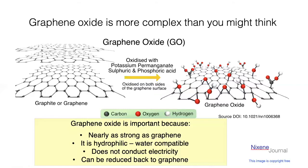Now I want to know what graphene oxide can do. Well, it's nearly as strong as graphene. It is hydrophilic — that means it is compatible with water. Graphene is hydrophobic, so it repels water, so it has quite different chemistry there. Graphene oxide doesn't conduct electricity, but you can reduce it back to graphene. You can run the chemical reaction this way and make graphene oxide, or you can do what's called reduce — put it in reducing conditions, which basically pulls all these groups off and you go back to graphene again.